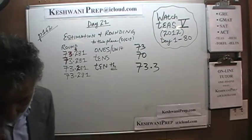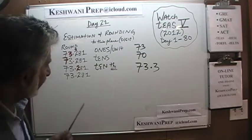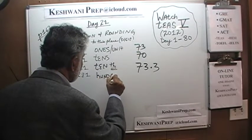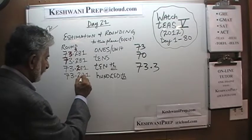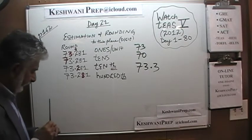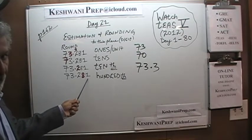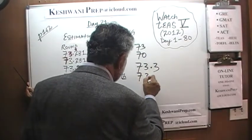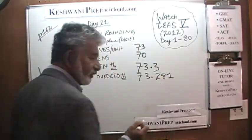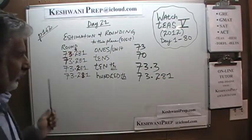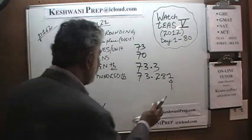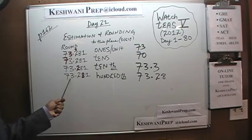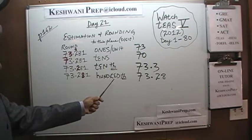The next one says round it to the nearest hundredth. The hundredths digit is the 8 in 73.281. We look one digit to the right, which is 1. One is not 5 or more, so we leave the 8 alone and drop the 1. 73.281 rounded to the nearest hundredth becomes 73.28.